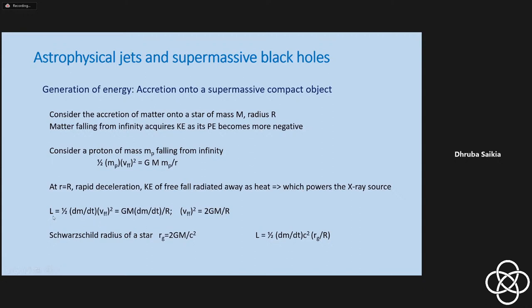I can write down the luminosity as a rate at which mass is being accreted, and express this using the free-fall velocity squared to get the luminosity in terms of the mass infall rate, the mass of the accreting object, and its radius. The Schwarzschild radius is given by Rg = 2GM/c². For the sun it's about 3 kilometers; for the moon, it will be in the millimeter scale.